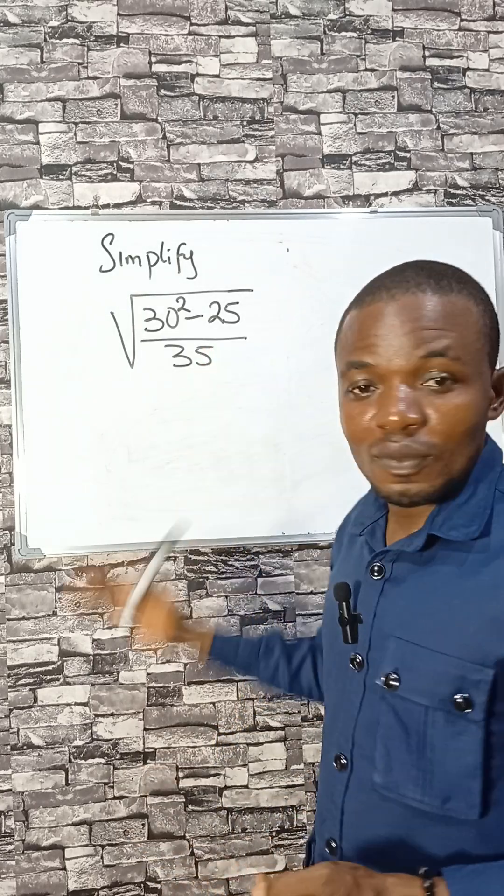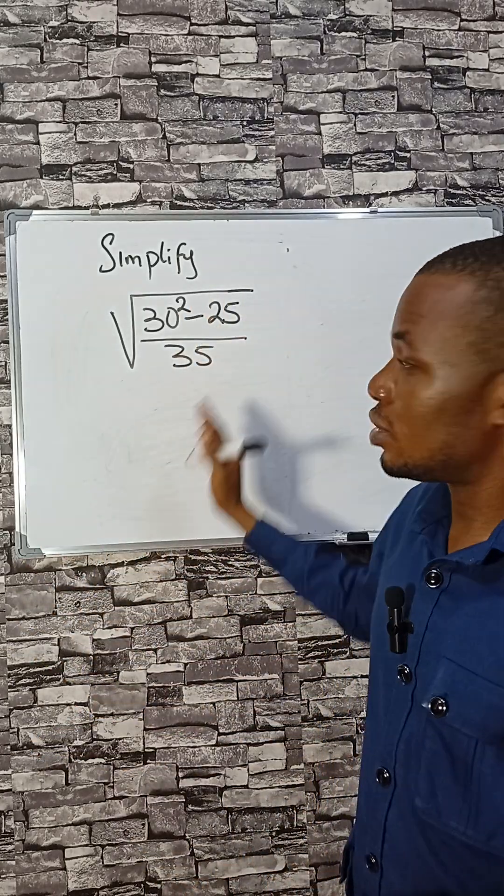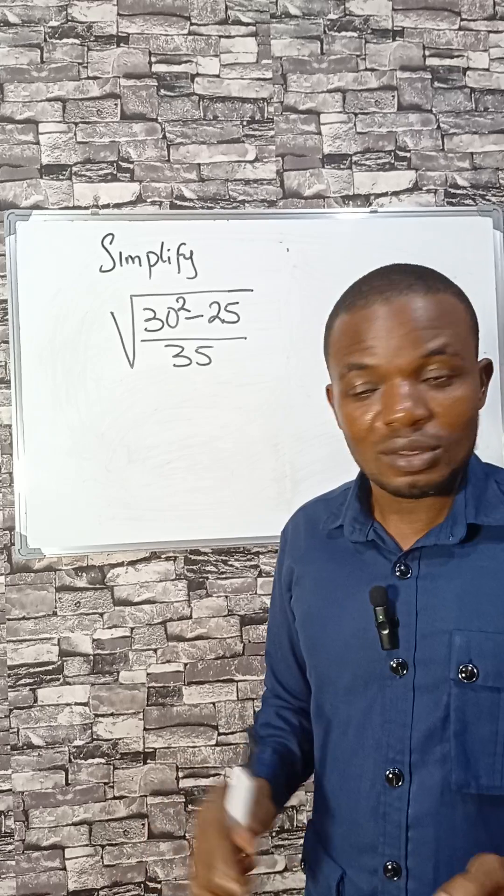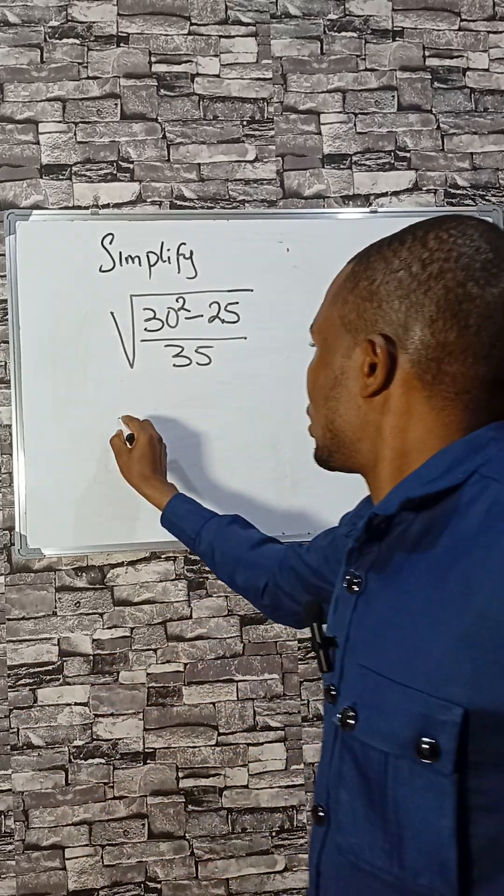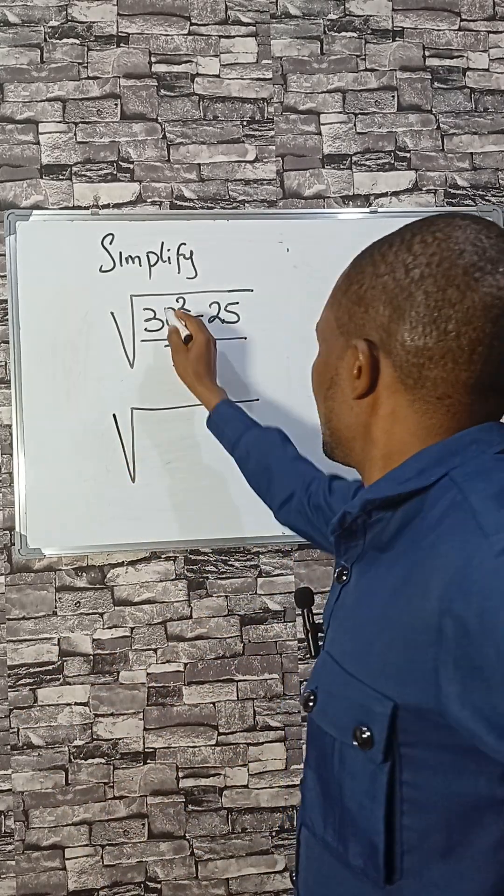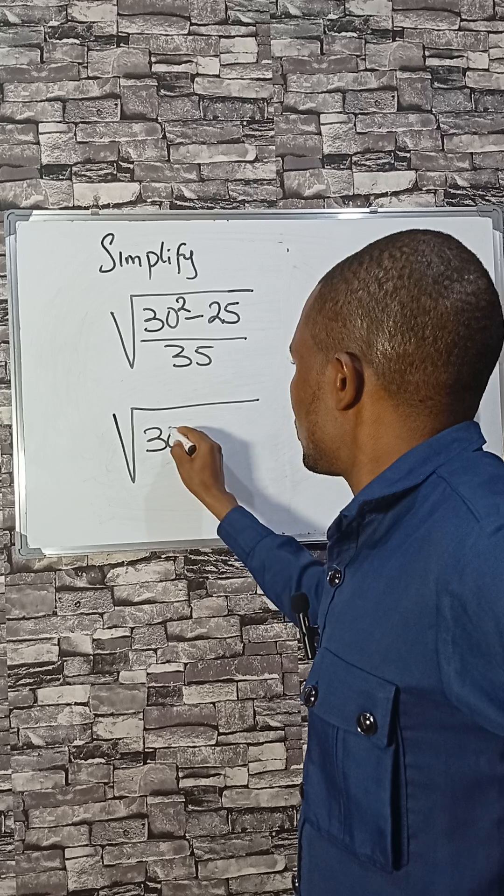Without using a calculator, let's solve this. Let's find the square root of this in a few seconds. Now look at the board here, let's employ difference of two squares.